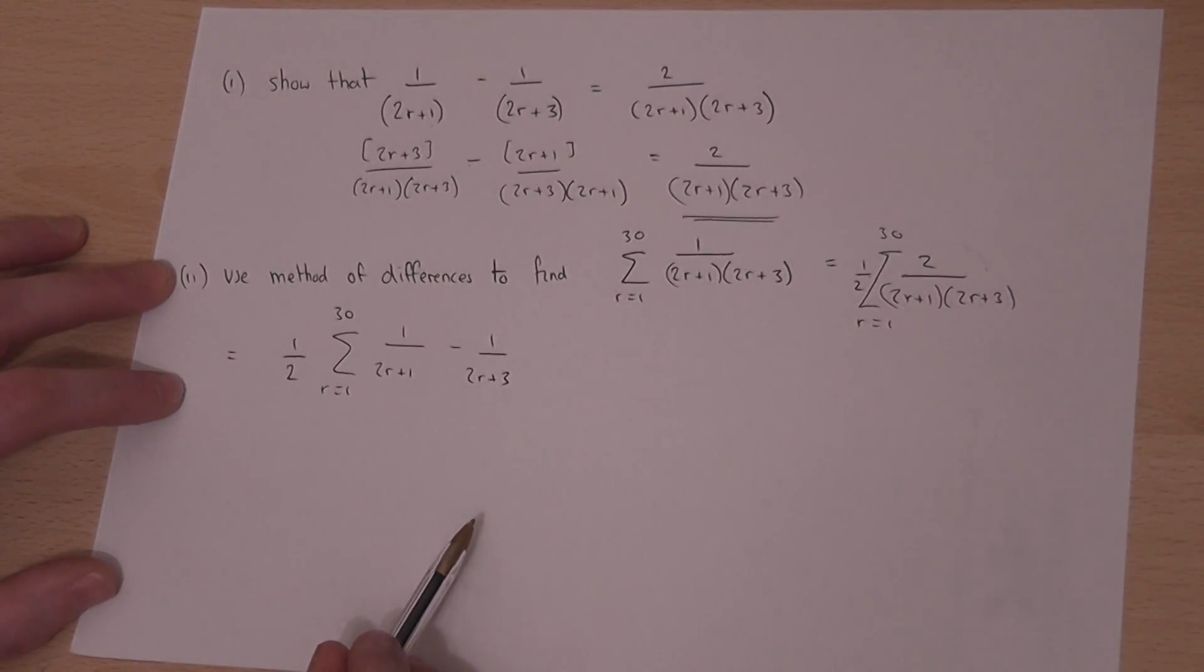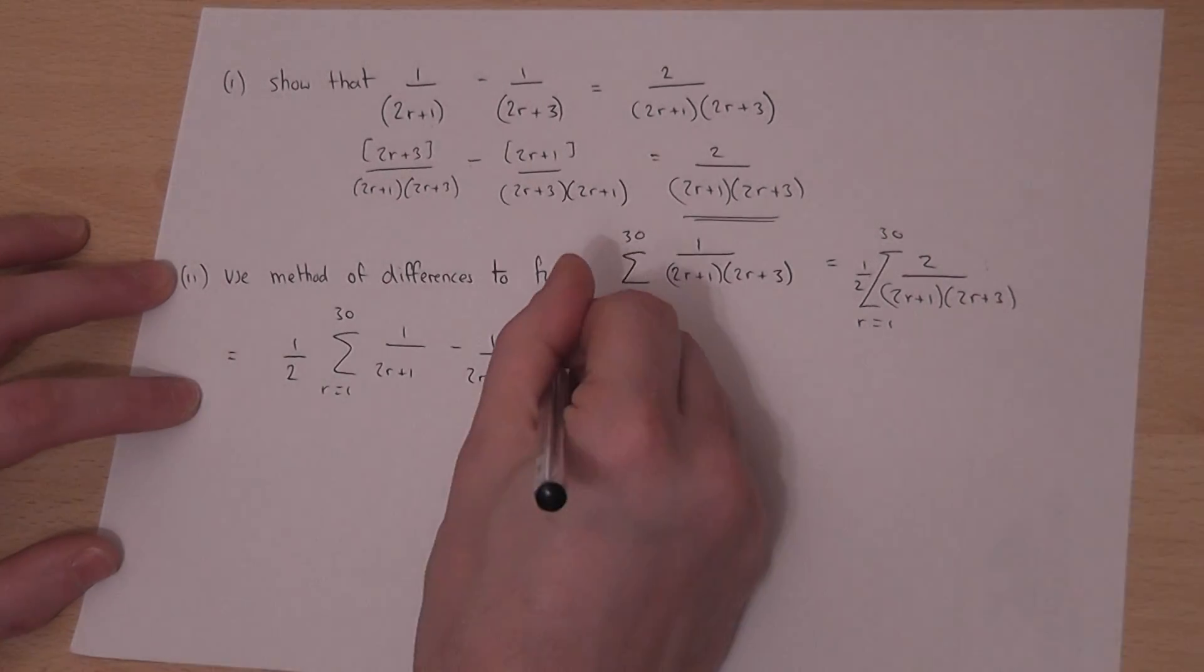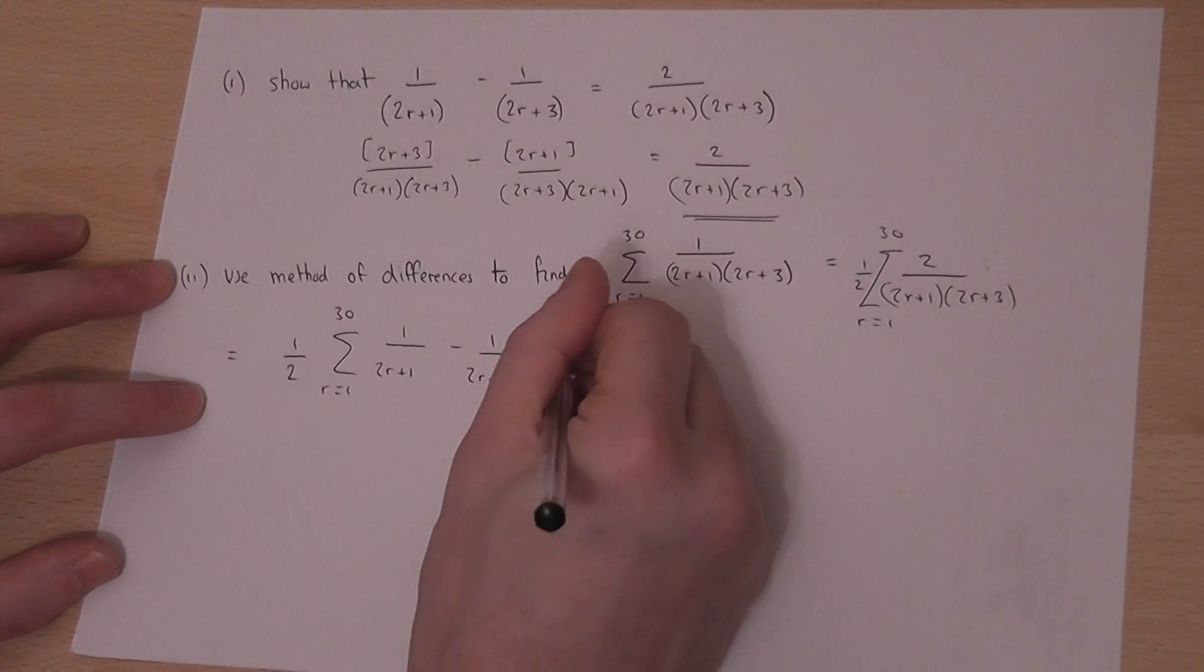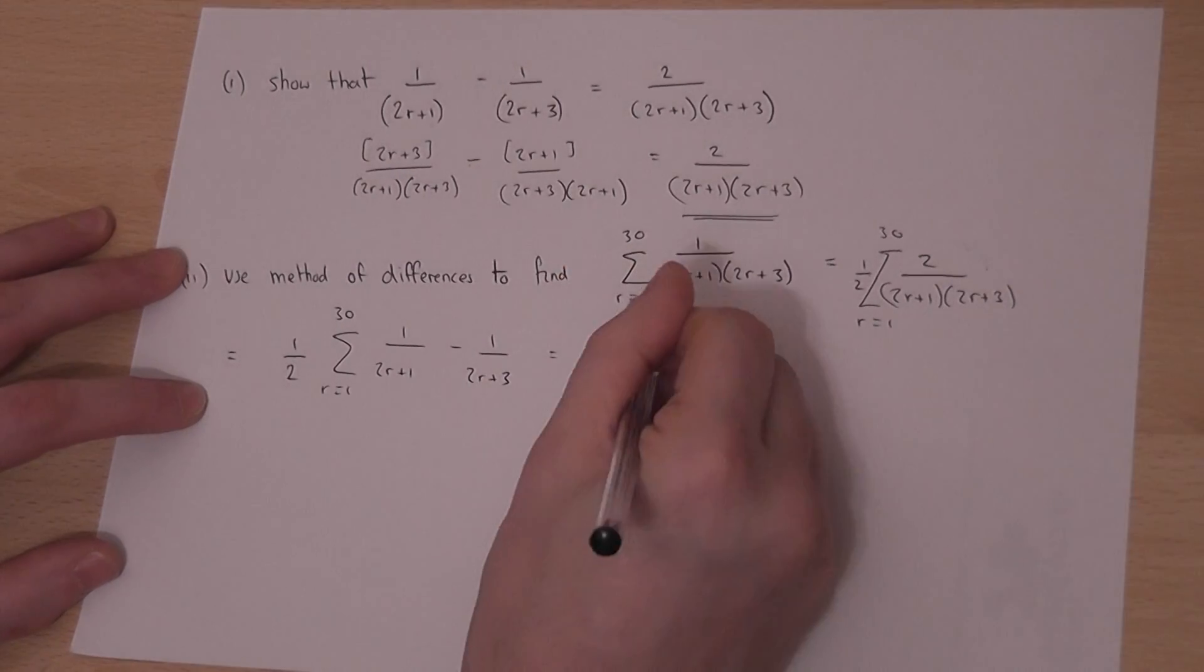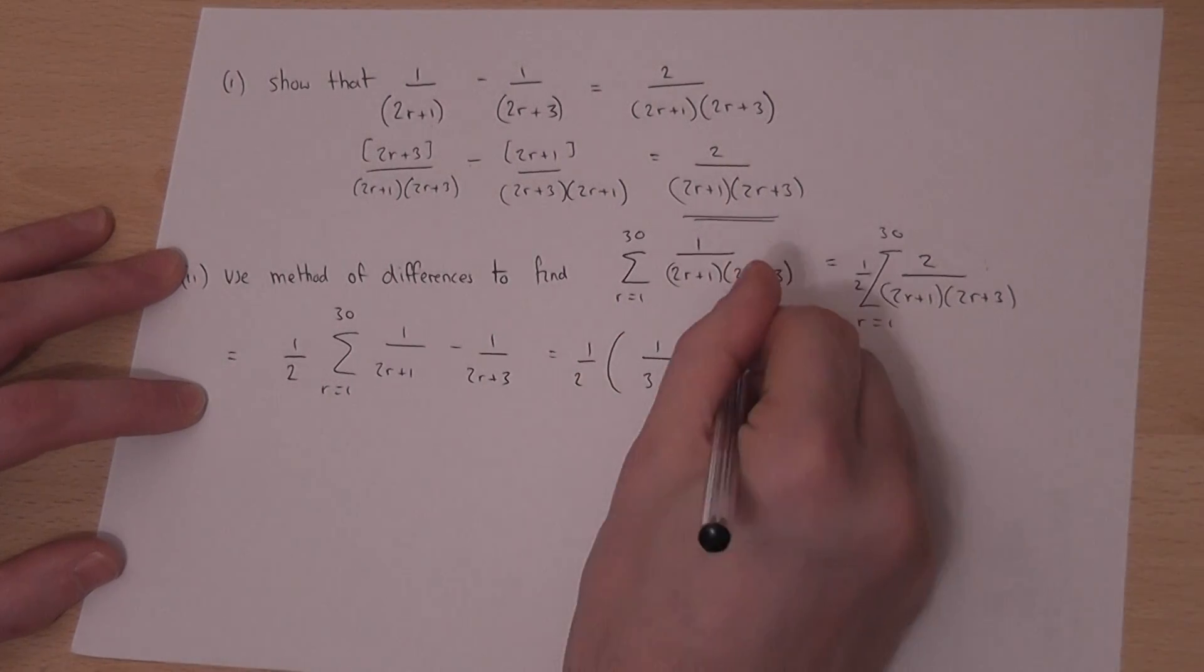Now the next bit is the clever bit. I begin to put some values in to see what happens. So I let r equal to 1. When r is 1 I get 1 over 3 take away 1 over 5.